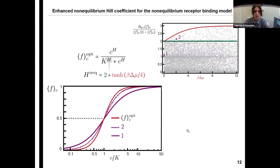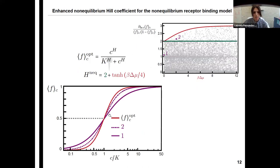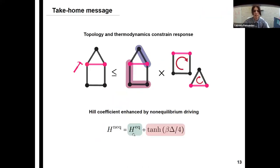So I was almost finishing, and what I was going to say is that the steepness of the curve, of the purple curve and the dashed curve, are always upper bounded by this Hill-like curve out of equilibrium. So thank you for listening to the talk, and I would like you to take as take-home messages that the topology and thermodynamics constrain non-equilibrium response, and if we apply those results to a receptor binding model, we do have that the Hill coefficient is equal to the equilibrium Hill coefficient plus a non-equilibrium driving. Thank you.